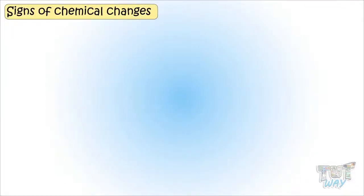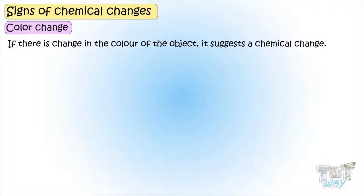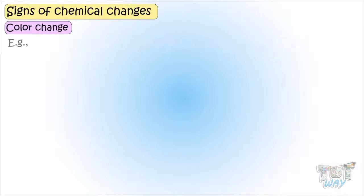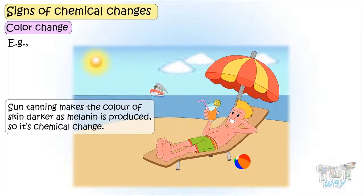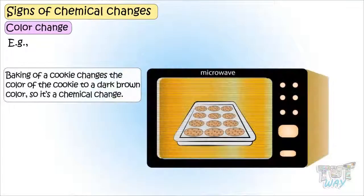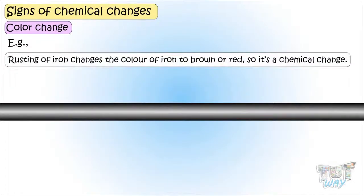Now let's learn about some signs of chemical changes. Color change: if there is a change in the color of the object, it suggests a chemical change. For example, sun tanning makes the color of skin darker as melanin is produced, so it's a chemical change. Baking of cookies changes the color of the cookie to a darker brown, so it's a chemical change. Rusting of iron changes the color of iron to brown or red, so it's a chemical change.